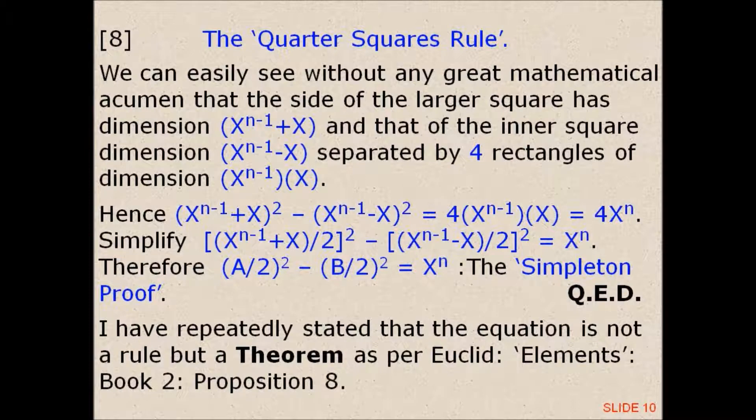We can easily see, without any great mathematical acumen, that the side of the larger square has dimension X to the power n minus 1 plus X, and that of the inner square dimension X to the power n minus 1 minus X, separated by four rectangles of dimension X to the power n minus 1 times X. Hence, (X to the power n minus 1 plus X) all squared minus (X to the power n minus 1 minus X) all squared equals four times X to the power n.